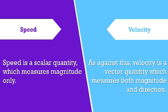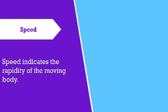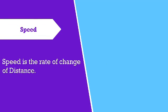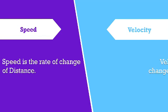Speed indicates the rapidity of the moving body. Velocity indicates the rapidity as well as position of the object. Speed is the rate of change of distance. Velocity is the rate of change of displacement.